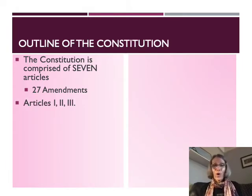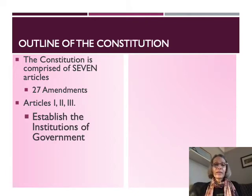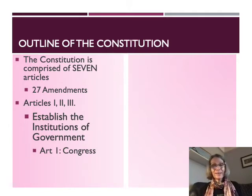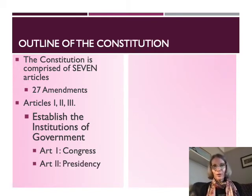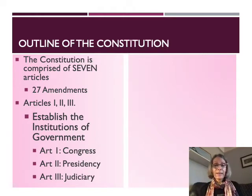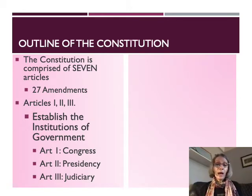Articles one, two, and three establish the institutions of government. Article one establishes Congress — telling us we'll have two houses, the Senate and the House of Representatives, how members are selected, and the powers of Congress. Article two establishes the presidency and the powers of the president. Article three establishes the federal courts — specifically the Supreme Court of the United States — and gives Congress the power to establish lower-level federal courts.